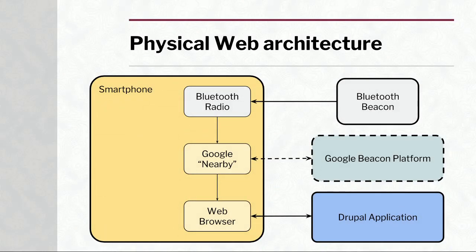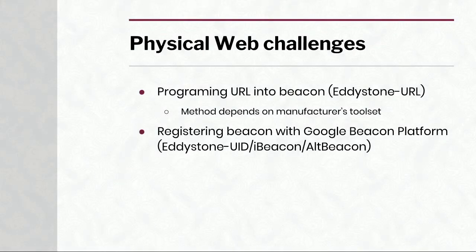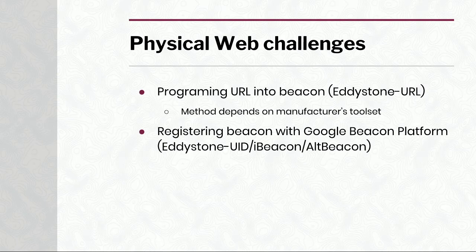Here's the Physical Web architecture. You have the Bluetooth beacon communicating with the phone through the Bluetooth radio. It passes that beacon information to the Google Nearby service. If it's not an Eddystone URL type beacon, it does a lookup to the cloud and passes the URL off optionally to a web browser. In the case of using a Drupal application, that web browser communicates directly with your Drupal site. The challenges are pretty minor — you just have to program the URL into the beacon or register it with Google, which is a relatively straightforward process.